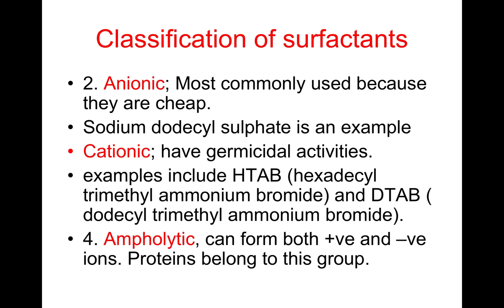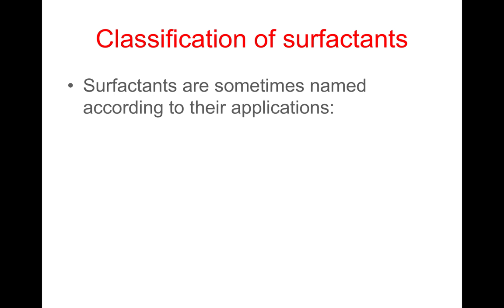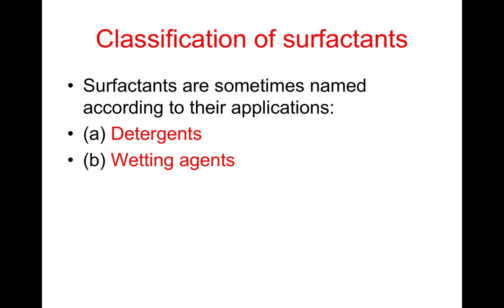Four, we can also have ampholytic surface active agents which can form both positive and negative ions on dissolution. Proteins belong to this group. We sometimes name surfactants according to their applications. For instance, we can have detergents which are mainly used for washing and cleaning. We can have wetting agents, emulsifiers which are used for turning two layers into a uniform emulsion, and we can also have dispersants.